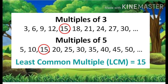For example, multiples of three are three, six, nine, twelve, fifteen, etc. And multiples of five are five, ten, fifteen, twenty. So the first common multiple is fifteen. That's why fifteen is the least common multiple of five and three.